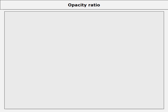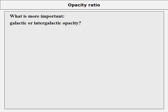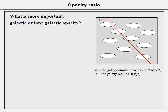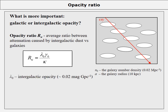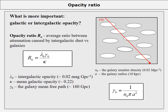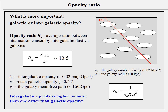We can ask which effect is more important — galactic or intergalactic opacity. Considering the spatial occurrence of galaxies, we can estimate both effects and calculate their ratio, called the opacity ratio. The formula depends on intergalactic opacity, mean galactic opacity, and the galaxy mean free path. Inserting standard values gives an opacity ratio of about 13.5, meaning that the effect of intergalactic opacity is at least 10 times higher than that of galactic opacity.